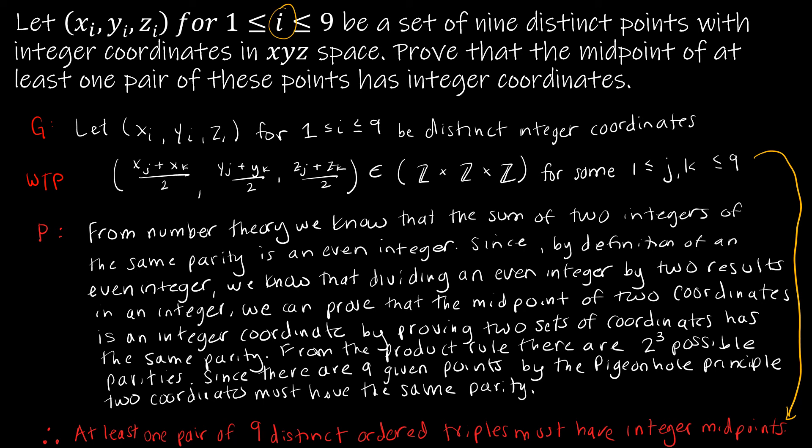So we're looking for two integer coordinates that have the same parity. And what I'm talking about when I'm talking about the parity is, I'm talking about say, even, even, even, and another one that's even, even, even, or two that have even, odd, even, or two that have odd, odd, odd. We get the idea, we need them to have the same parity.